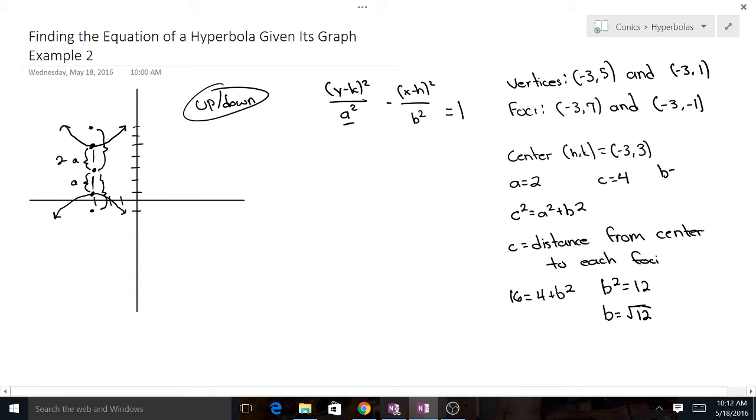So now we've figured out everything we need. We have h, k, we have a and b, so let's just plug in. So we've got (y - 3)² - be careful not to write the x value - then a squared, a is 2, so a squared is 4, minus (x - (-3)), so be careful with that, minus negative 3 is the same thing as plus 3 squared over b squared, which is (√12)², which is just going to be 12, equals 1.